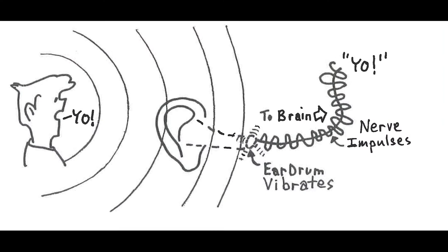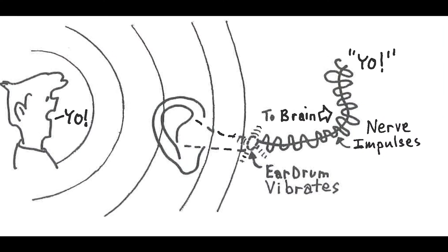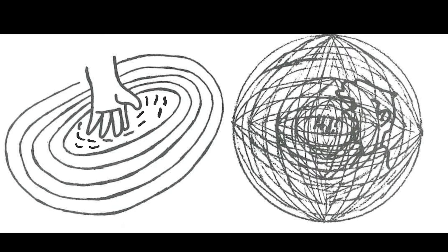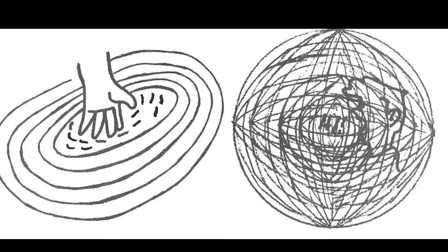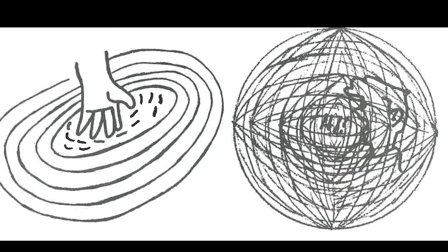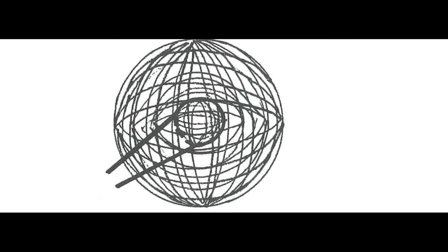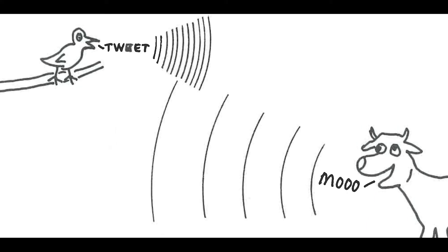First, I want to touch on the physics of sound. Every sound is caused by vibration. Think about what happens when you throw a pebble into a lake — there are ripples that travel on the surface of the water. Sound is just like that, except it travels in a sphere, traveling equally in all directions. The distance between each wave is called frequency, which affects the pitch of the sound. A bird chirping, for example, would have a higher frequency than a cow mooing.